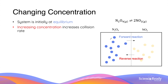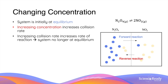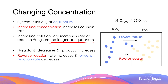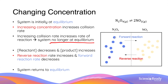Increasing the concentration of the reactants increases collision rates between those molecules, which increases the rate of reaction. The forward reaction becomes faster than the reverse reaction, so the system is no longer at equilibrium. As a result, the reactant concentration decreases and the product concentration increases. As reactant decreases, the forward reaction rate decreases; as product increases, the reverse reaction rate increases. This continues until the rates become equal and the system returns to equilibrium.